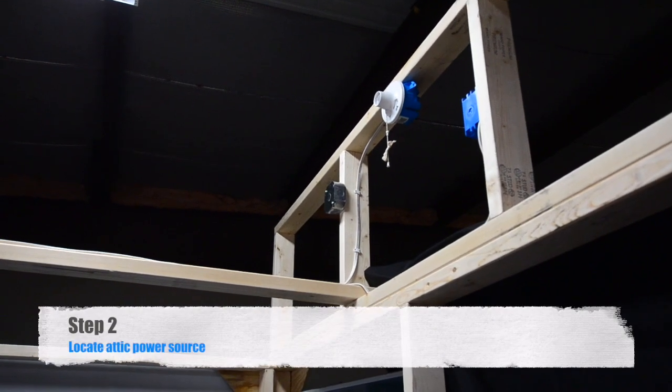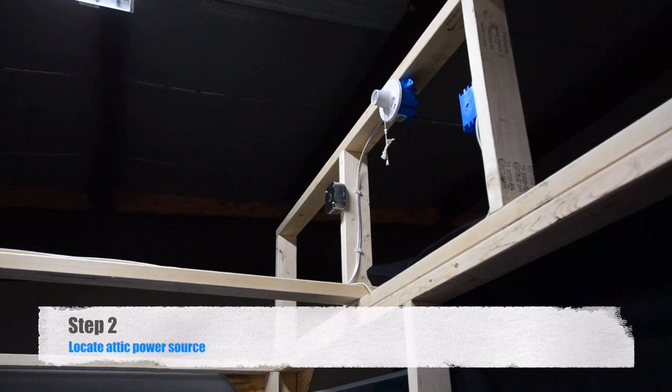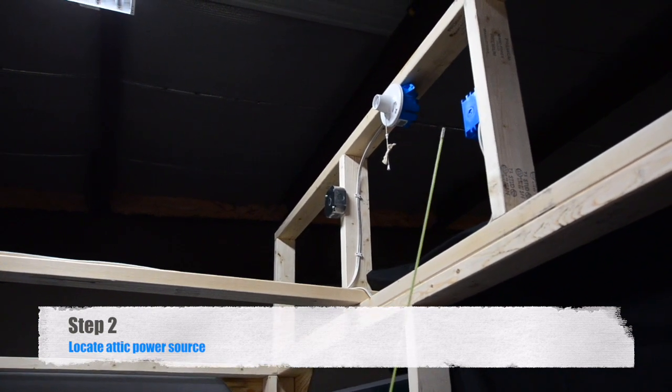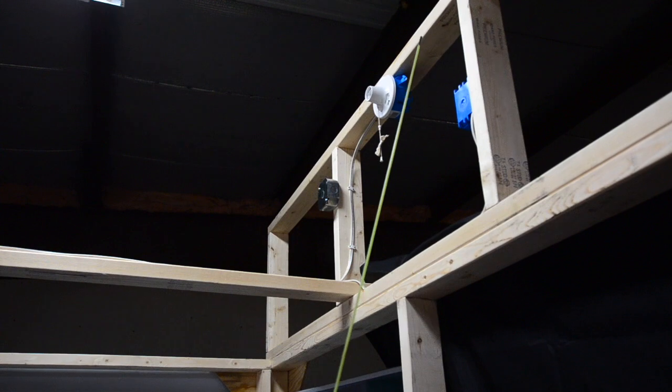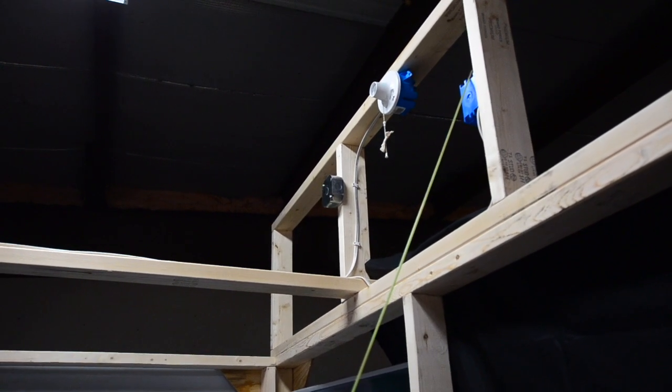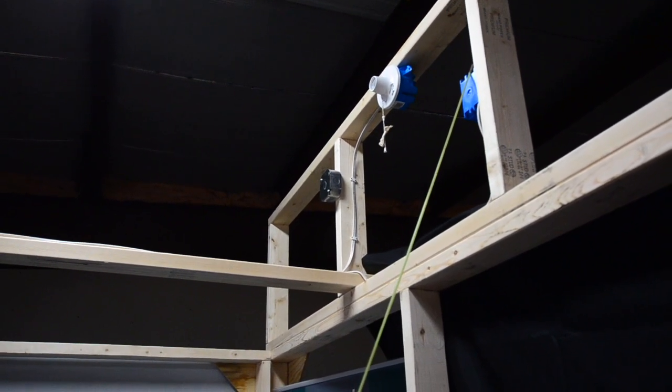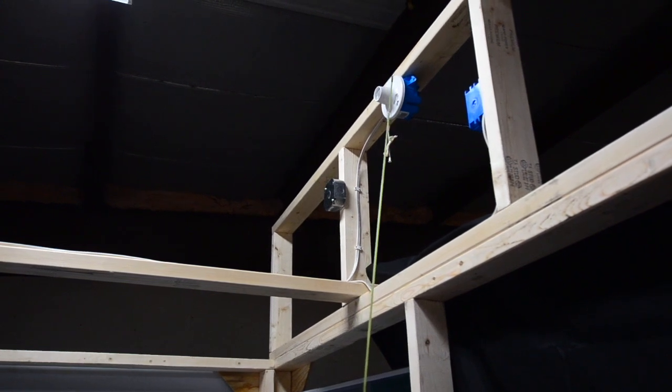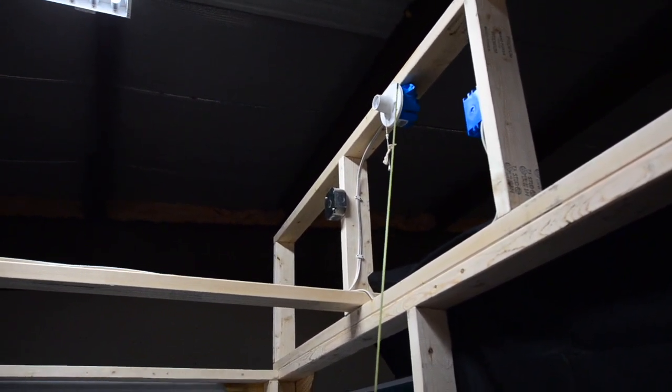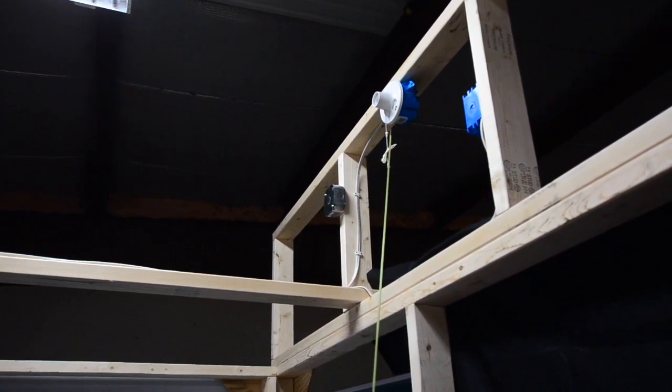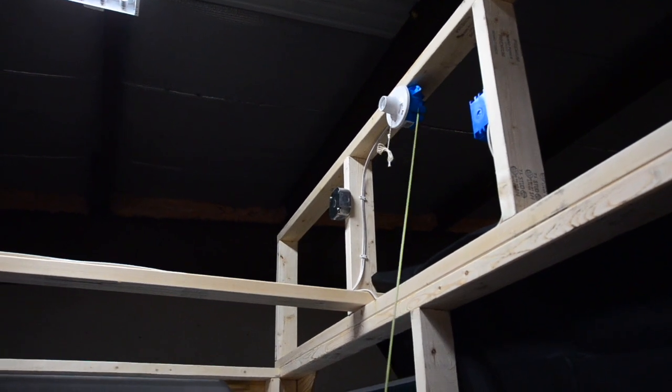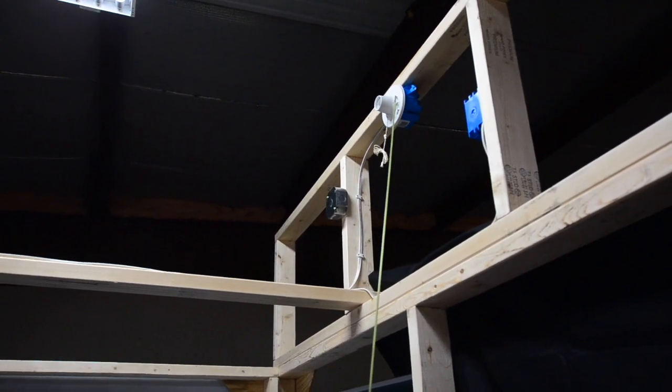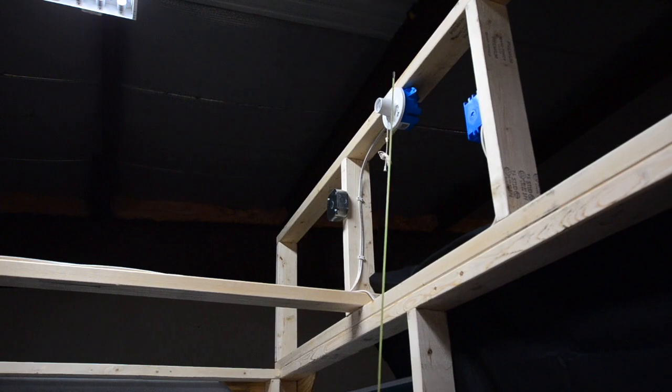So some simple places to grab power in the attic when you are up there to look for. Would be if you have a house with a knee wall. An outlet in that knee wall is a very good place to grab power from. The second spot would be if you have a light in that attic and it has a pull chain receptacle on it. Typically there is constant power there. That is a good spot to grab power from.